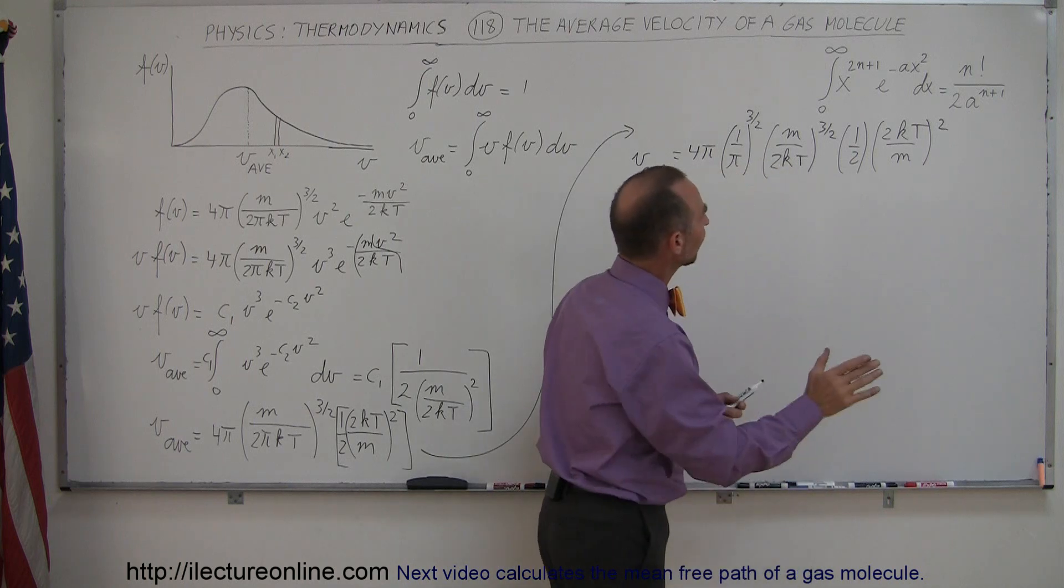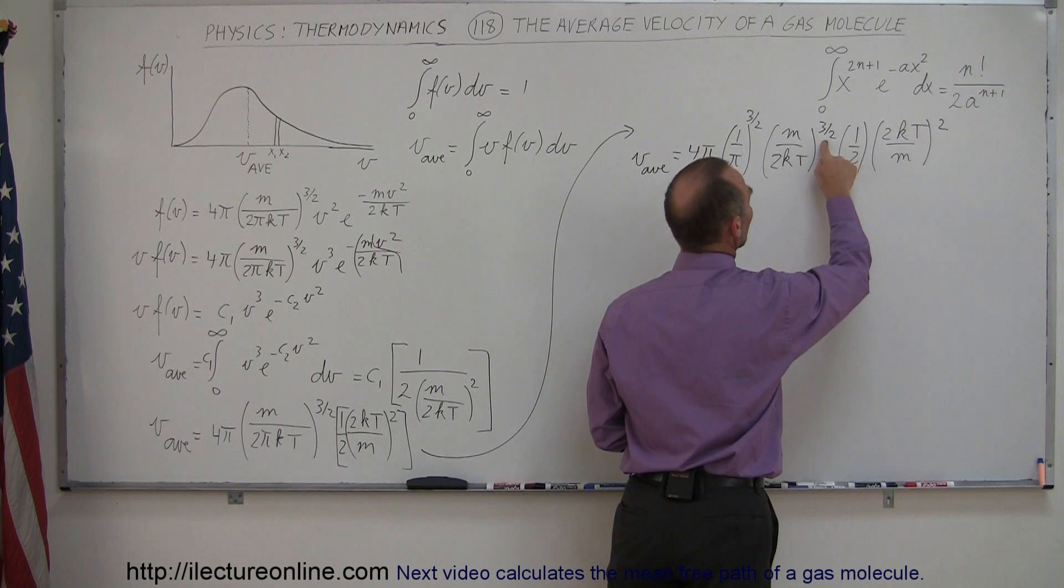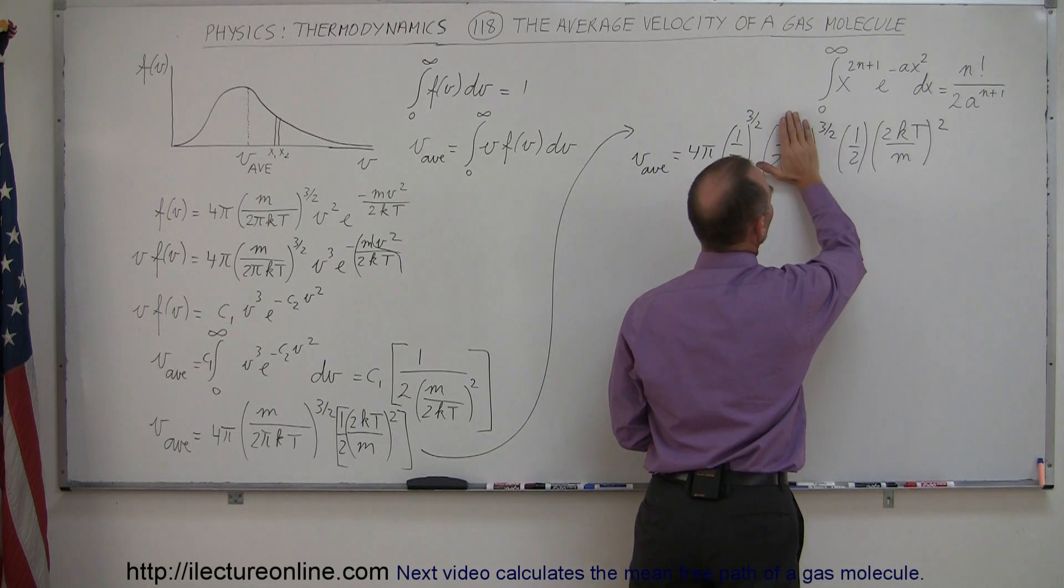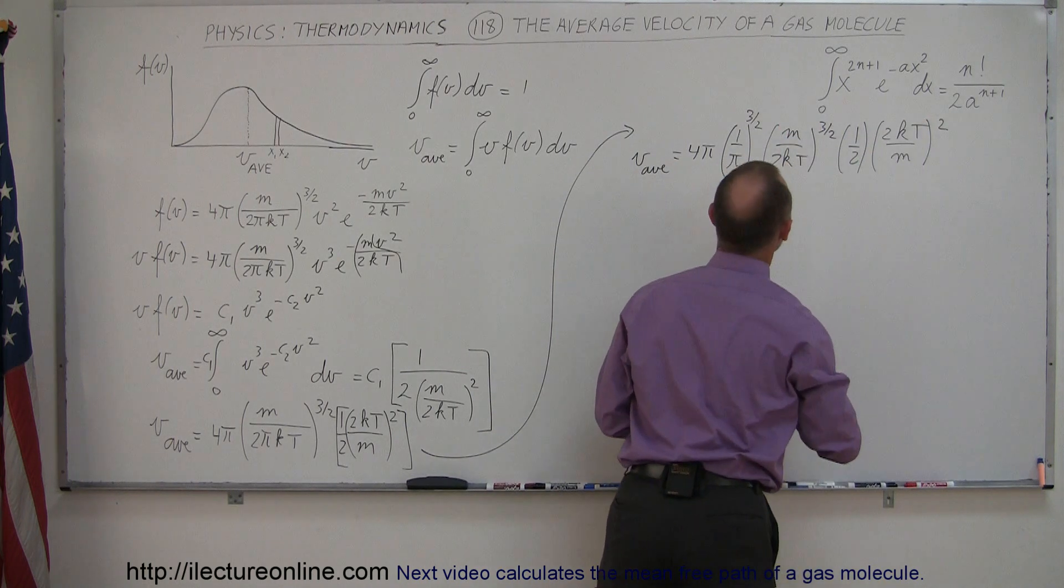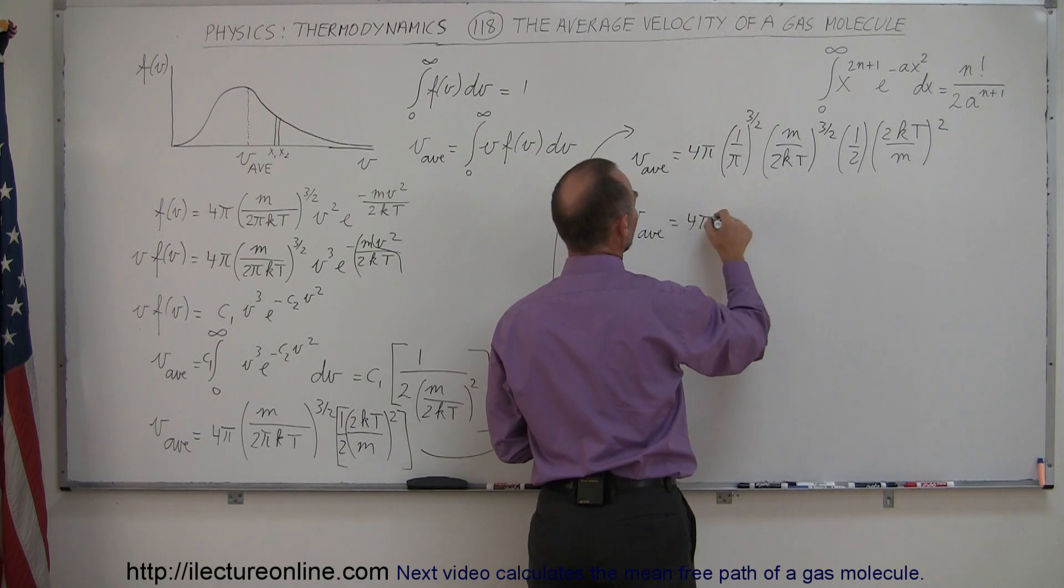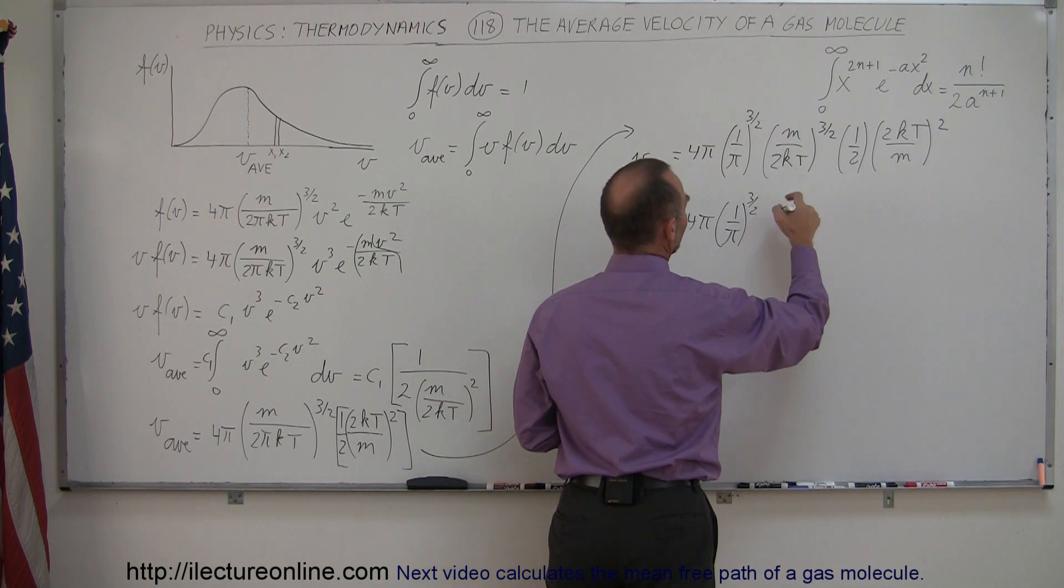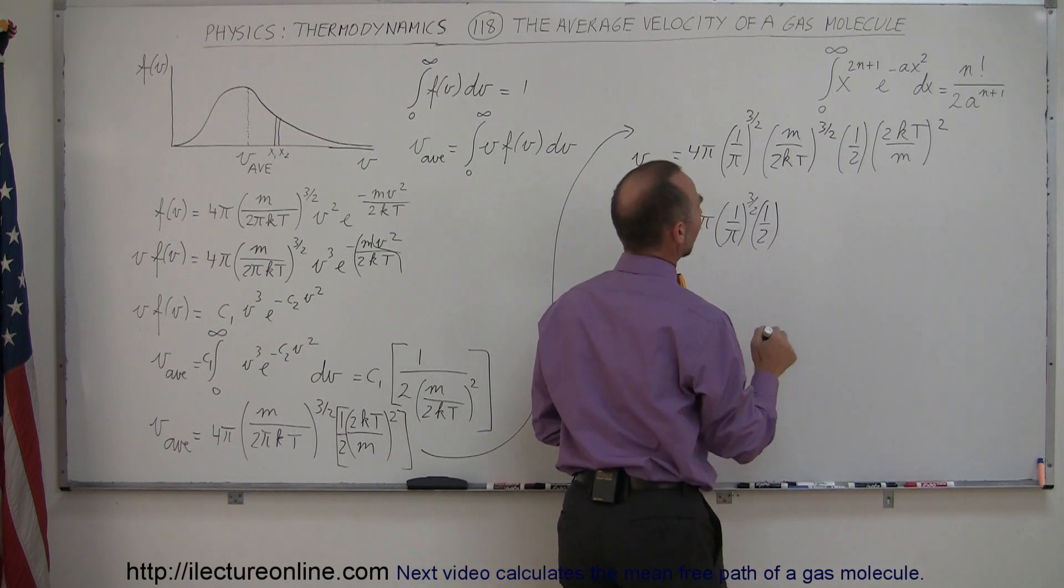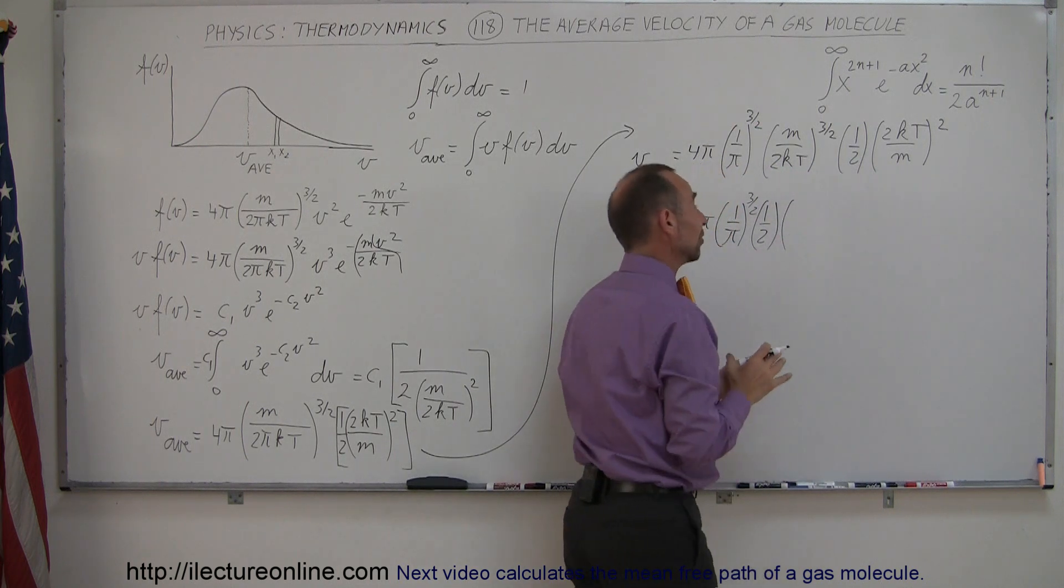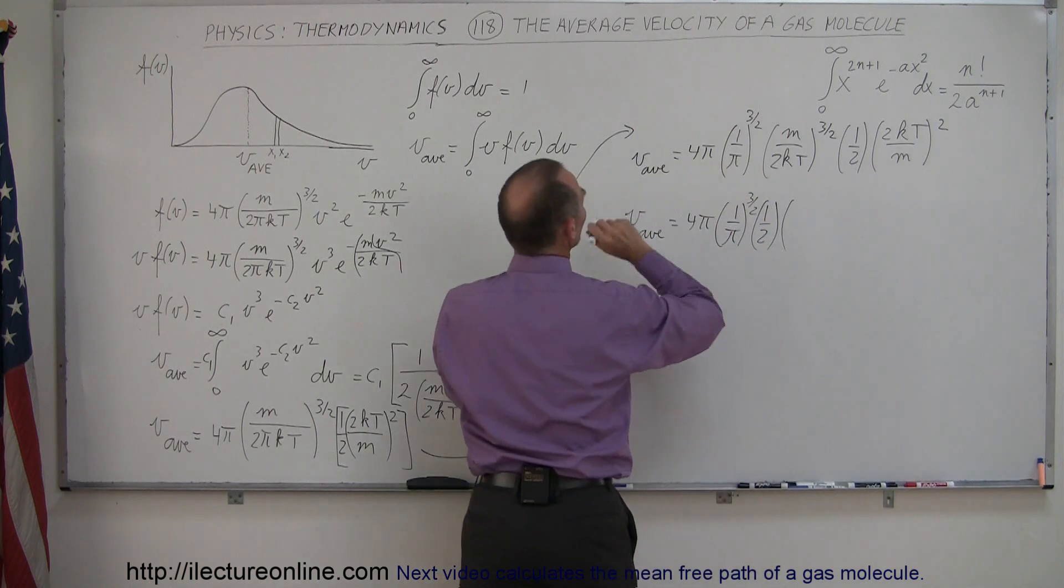Now, the reason I did it like that is because I have M over 2KT and the 2KT over M. This is to the 3 halves power, that's squared. So the 3 halves of that squared negates this, and I'm left with a 1 half power of this. So that means I have V average is equal to 4π times 1 over π to the 3 halves times 1 half, I'll put the 1 half here, and then this multiplied times this will give me, remember the bases are the same. Actually the bases are not the same, the bases are opposite, so they're going to cancel each other out.